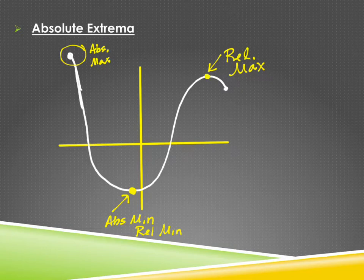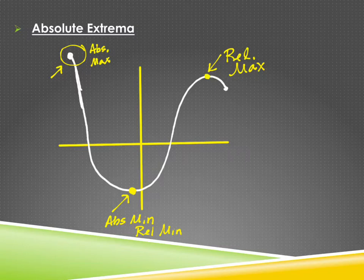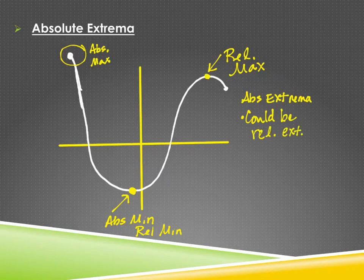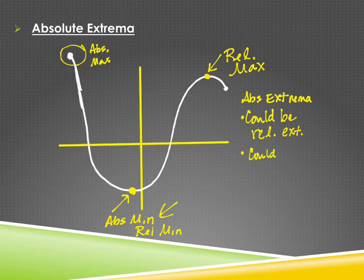We would not call this location up here a relative min, and the reason is because it doesn't have that derivative of zero. If the graph were to have continued, there's no reason to believe that it tapers off and goes back down at that location. What I want you to see from this graph is that there are two possible places where you can have absolute extrema: they could be relative extrema, or they could be an endpoint — the starting or ending of something.